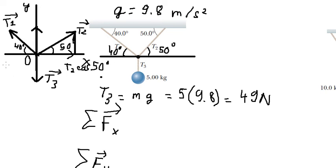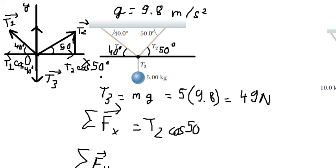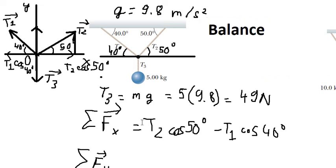Similarly for T1, the x-component is T1 cosine 40 degrees. We see that T2 cosine 50 degrees is opposite to T1 cosine 40 degrees, so they need to be subtracted from each other. Because this is about balance, everything must equal zero.